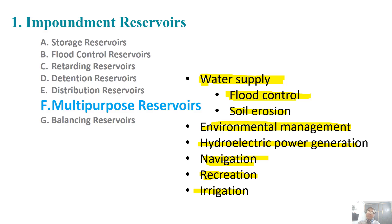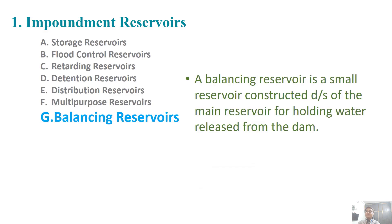It can be part of the largest scheme. Any dam which serves more than two of these functions, we can say it is a multipurpose reservoir. In addition to the main reservoir, there is a balancing reservoir for holding water released from the spillways. If there is excess water from the dam, this water will be going to the balancing reservoir where it is held for future uses.